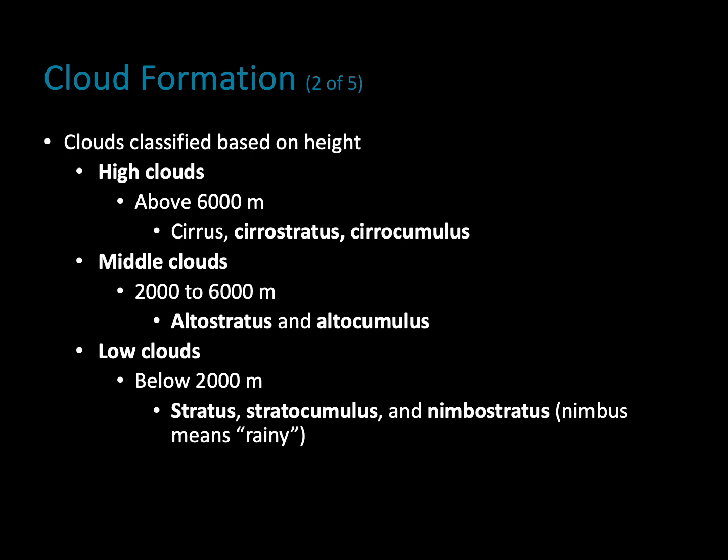If we're looking at a cloud lower than this, it's probably a middle cloud — found between 2,000 and 6,000 meters above the ground. With these middle clouds, we give them the root word alto at the front. Alto just means middle; if you've ever been in a choir, alto is like the middle range. But then we also have our low clouds, below 2,000 meters. We start these clouds' names with stratus — we see this with stratocumulus and nimbostratus. Remember, nimbostratus are our precipitation clouds, so nimbus means rainy.